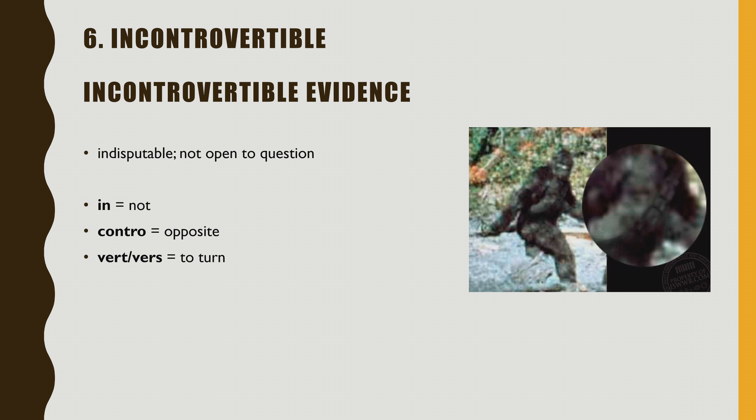For example, if someone says they have evidence of Bigfoot — like what you see in the picture — is this incontrovertible evidence? Well, photos can be manipulated these days, photoshopped, or it could be a guy in a suit, so this is not really incontrovertible evidence. If we found DNA of some creature that was not human but similar to human, that might be incontrovertible evidence of something. Generally, think of evidence so strong that no one can dispute it — that's the idea.